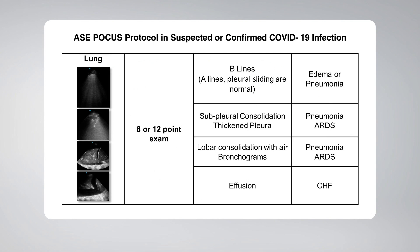The ASE focus protocol for suspected or confirmed COVID-19 patients explains that lung findings such as a thickened and irregular pleural line and scattered B-lines are consistently found in viral pneumonia.